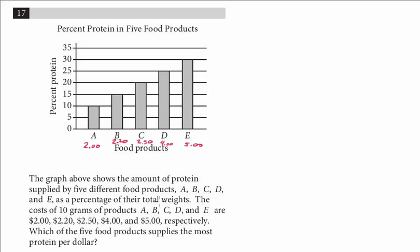Let's figure out how many grams of protein. We're told that these costs are based on 10 grams. Let's figure out how many grams of protein they'll each have. Remember, 10 total grams. So, now we use this histogram.